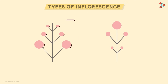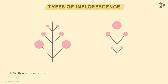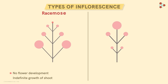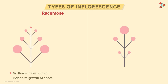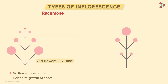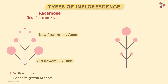The first type is where the flowers are arranged laterally along the central axis. The most important point to note here is that the apex, or the terminal point of the shoot, does not bear a flower — meaning it can freely grow indefinitely. Such a type is called racemose inflorescence. The arrangement of flowers is alongside the central axis, leaving the apex free. In this type, older flowers are found near the base, while newer ones start developing towards the apex. Since the apex can grow continuously and indefinitely, this type is also called indefinite inflorescence.